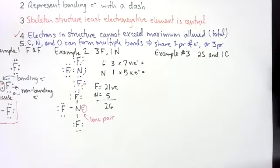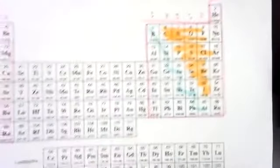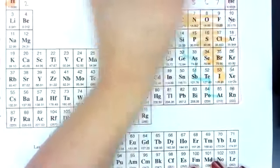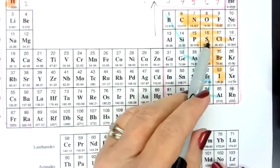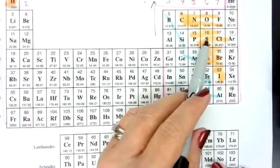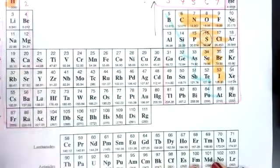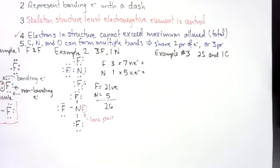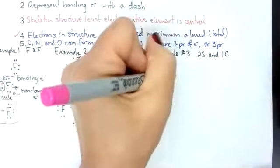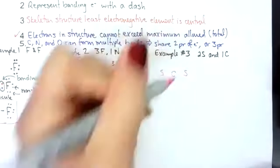Well, if you remember, rule number three is we have to do a skeleton structure and the least electronegative element is central. Remember electronegativity increases as I go up the table and over. If I look at carbon and sulfur, yes, carbon is above, but sulfur is two over this direction. So sulfur actually has a higher electronegativity than carbon. Another good rule of thumb is usually if you have carbon, carbon tends to be central. So I am going to put my carbon in the middle and I'm going to put my sulfur on either side.